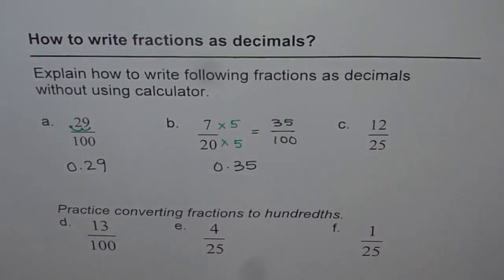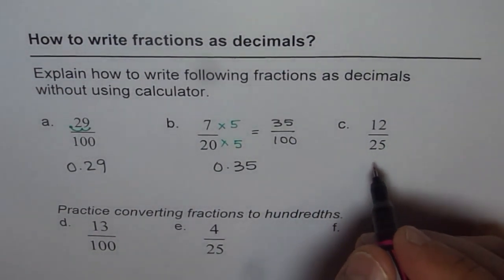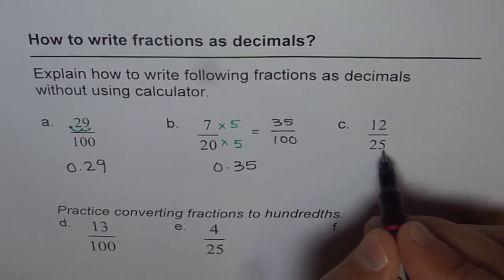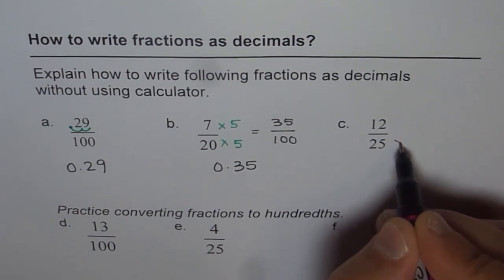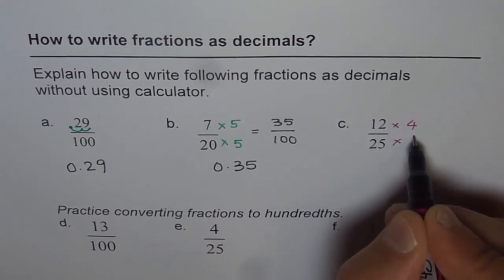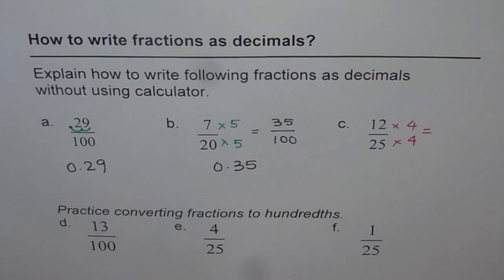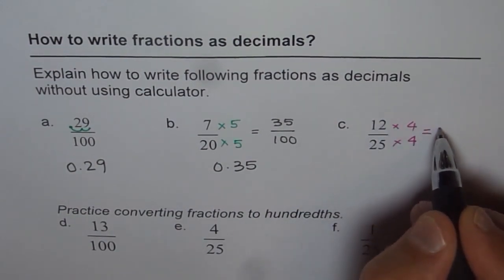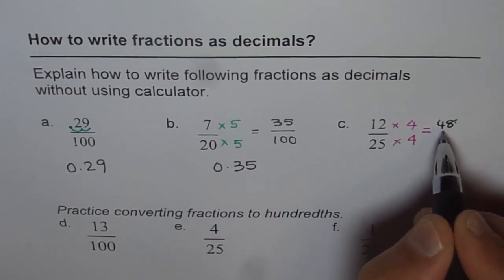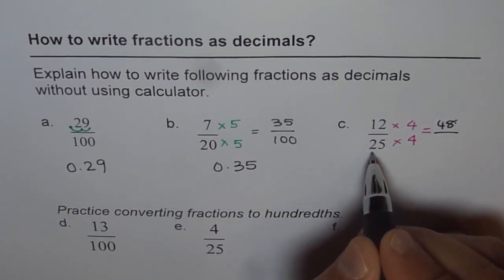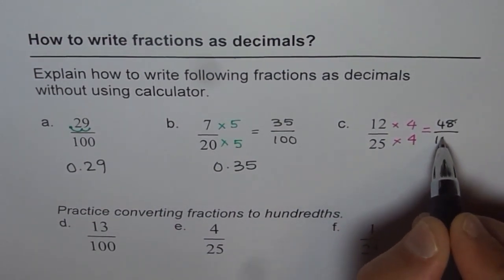Now let us do the last one here, which is 12 over 25. How can you make 25 into 100? There are 4 quarters in a dollar, right? So let us multiply them by 4. Then what do we get? 4 times 12: 4 times 2 is 8, and 4 times 1 is 4, so 48.